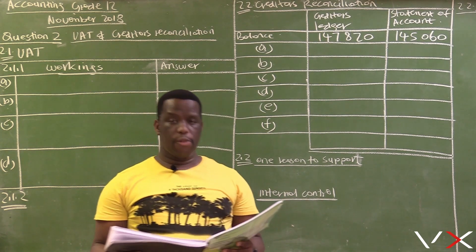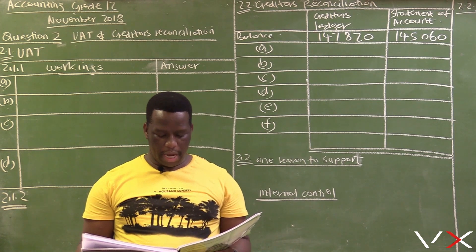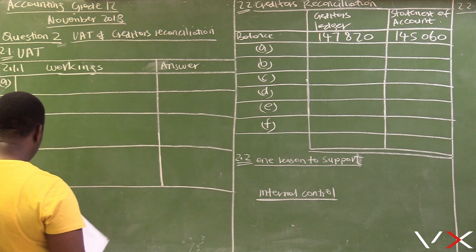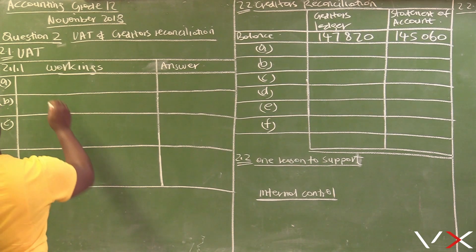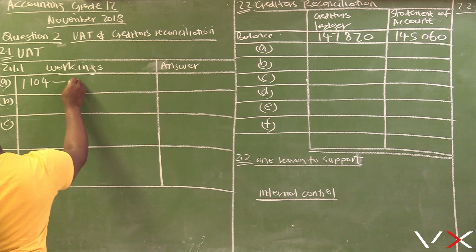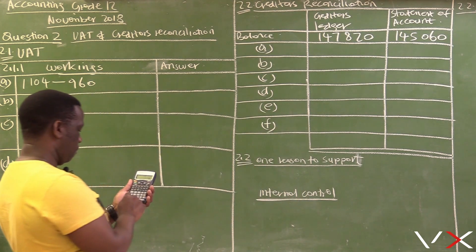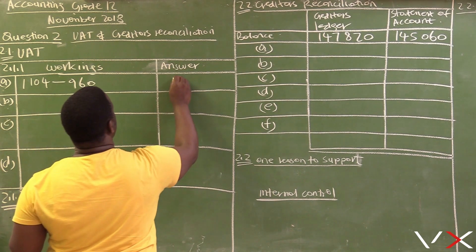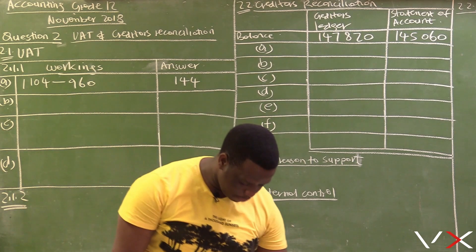The first calculation is A — we are required to calculate the VAT amount. Looking at the table, the amount excluding VAT is 960 and the amount including VAT is 1,104. Since we have both amounts, we simply subtract: 1,104 minus 960 equals 144. So the VAT amount is 144.